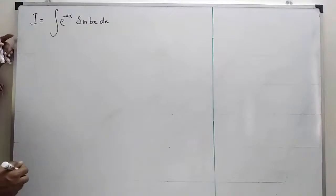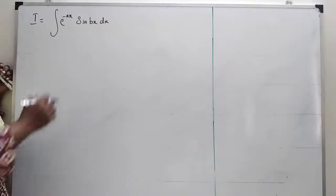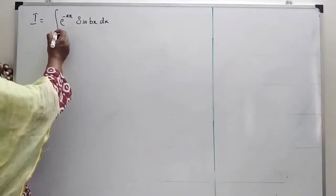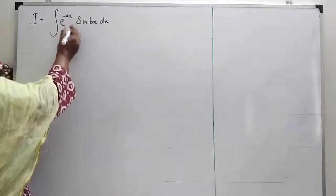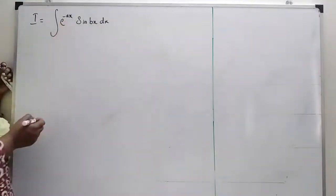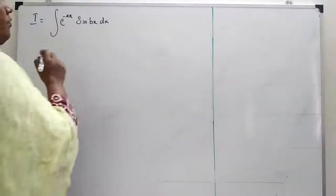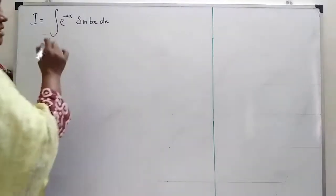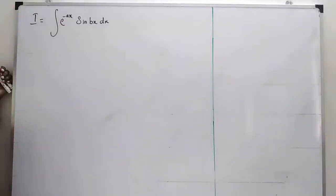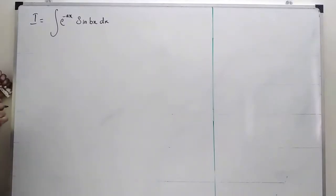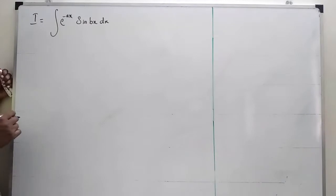Students, now we have I is equal to integral of e power minus ax sin bx dx. We have to integrate this using integration by parts.